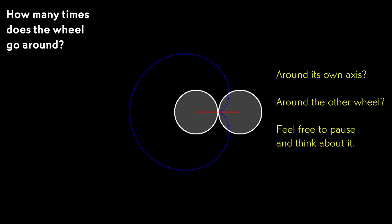Now let's look at the motion of the wheels. How many times does the moving wheel revolve about the fixed one, and how many times does it rotate about its own axis? I'll give you a few moments to think about it. Feel free to pause the video until you think you have the answer.